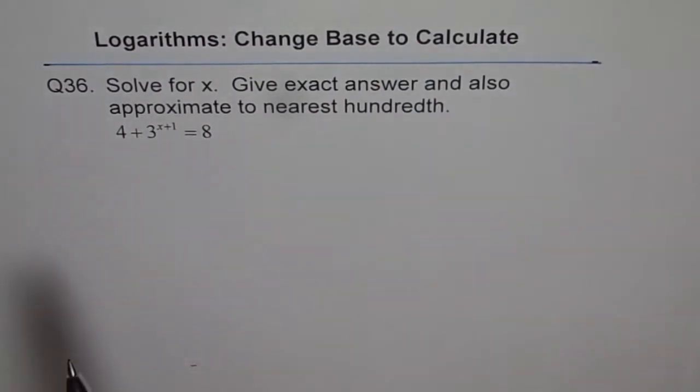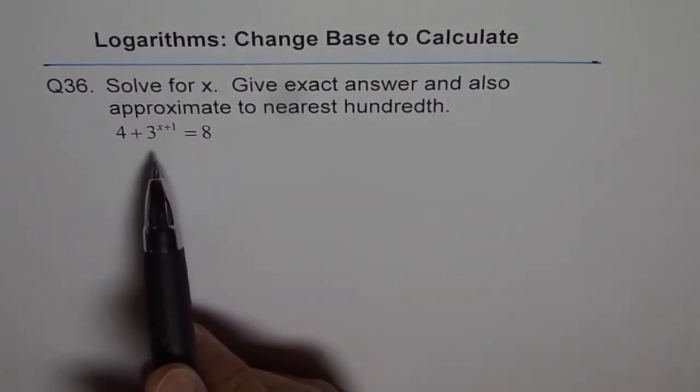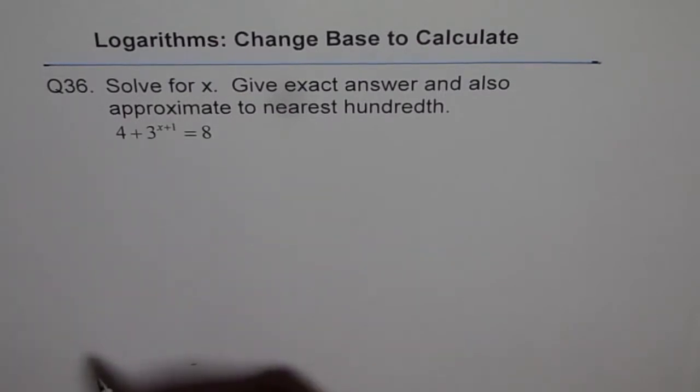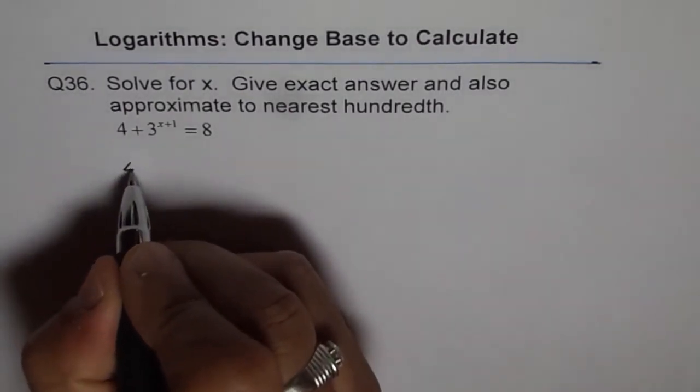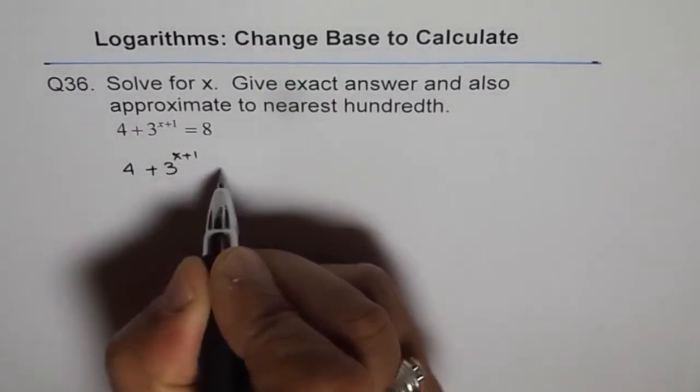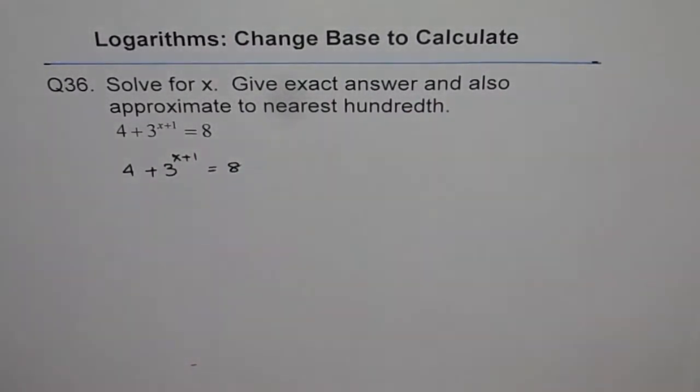The equation given to us is 4 plus 3 to the power of x plus 1 equals to 8 and we need to find what x is. So let's start solving this by rewriting the equation.